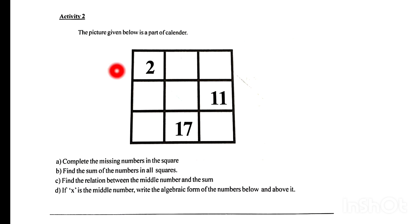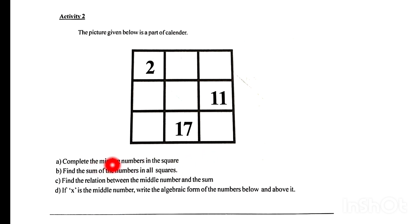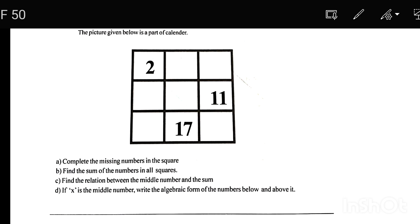The picture given is a part of a calendar. Complete the missing numbers in the squares. Find the sum of the numbers in all squares. Find the relation between the middle number and the sum. If x is the middle number, write the algebraic form of the numbers below and above it. Let's fill out the magic box and complete the missing numbers.